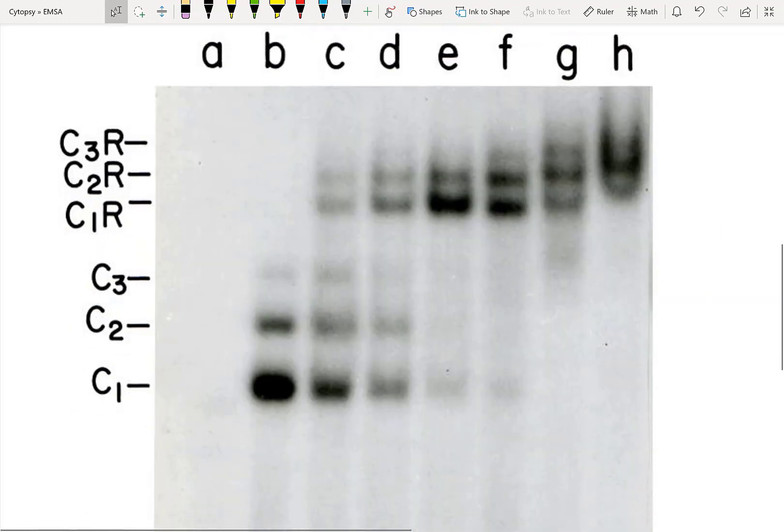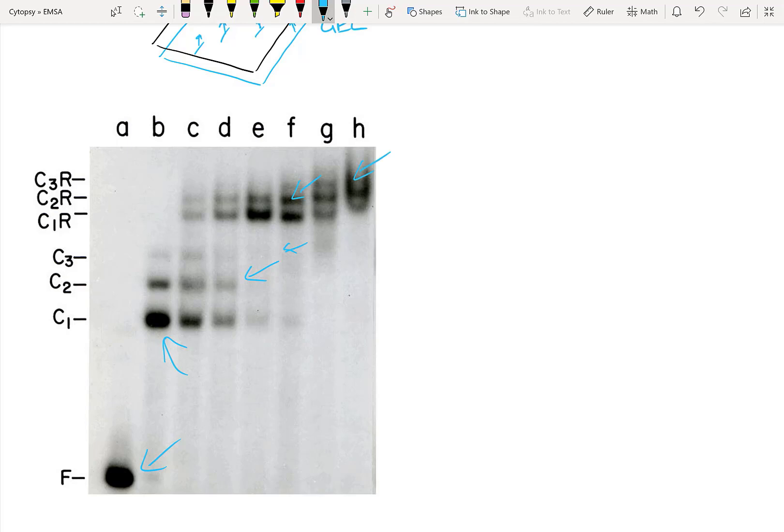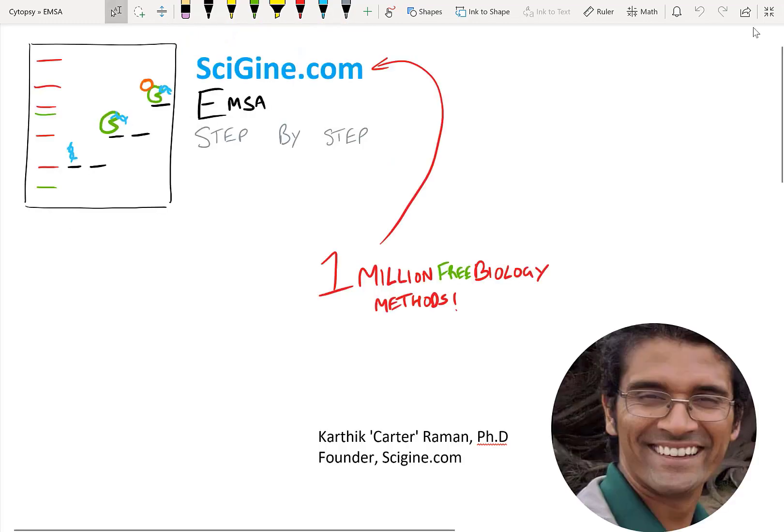At the end, you should get data that looks something like this. Here you can see that we've got free DNA at the bottom, some kind of DNA complex that's shown up here, and then super complexes of multiple proteins or different complexes of proteins binding the DNA and forming bigger and bigger complexes that have a bigger and bigger electrophoretic mobility shift within our EMSA. And that's about it.